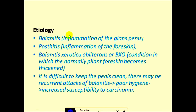The etiology of phimosis includes balanitis — inflammation of the glans penis — and posthitis, which is inflammation of the foreskin (prepuce). Another cause is balanitis xerotica obliterans, also written as BXO. BXO is a condition in which the normally pliable foreskin becomes thickened so it is unable to retract.